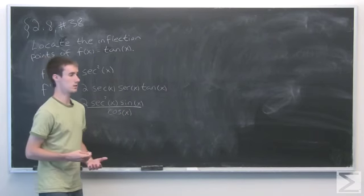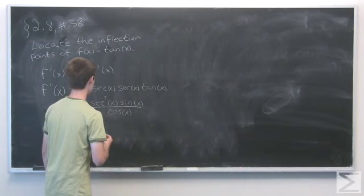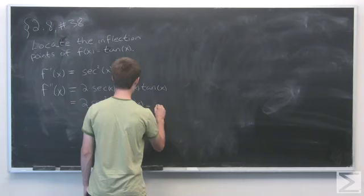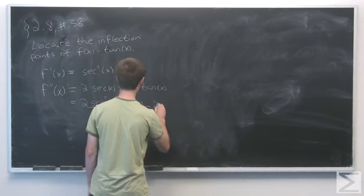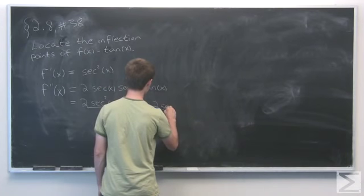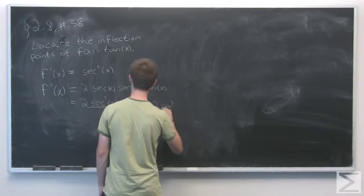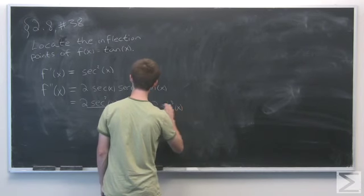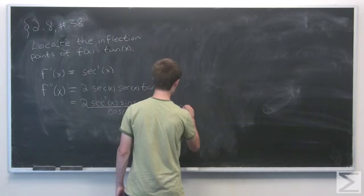But 1 over cosine is just equal to secant. So we'll rewrite this one more time as 2 times secant cubed of x times sine of x.